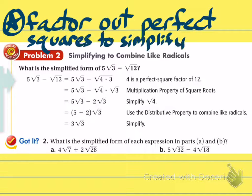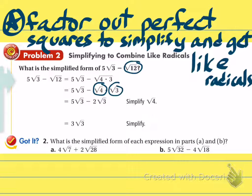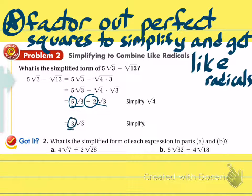Sometimes you will have to factor out a perfect square before you can simplify your answer. In this example, we have negative radical 12. Because radical 12 has a perfect square — that being 4 — you have to split radical 12 into radical 4 times radical 3. Your radical 4 becomes 2, and you now have radical 3 left over, which creates like radicals. So after simplifying the 12, you now have like radicals and can combine them. 5 minus 2 is 3, so 3 radical 3 is the final answer.